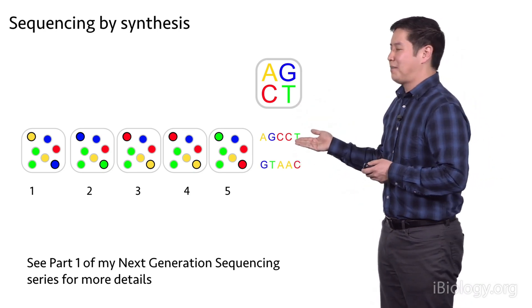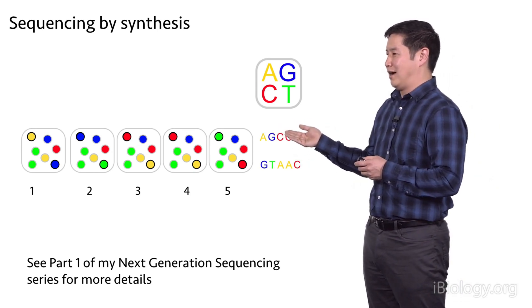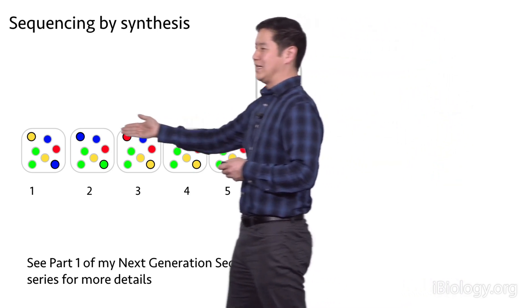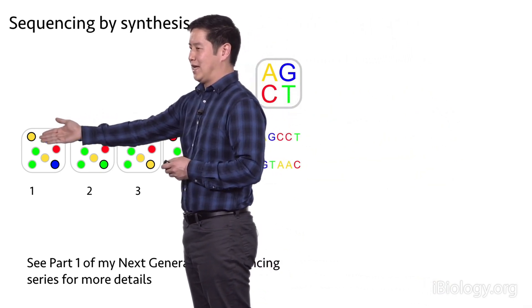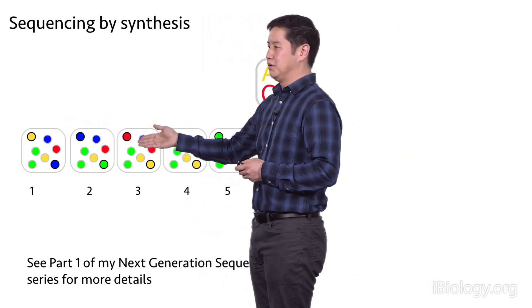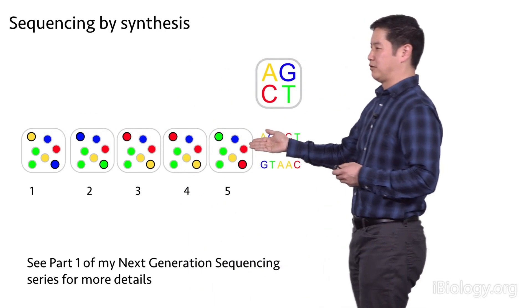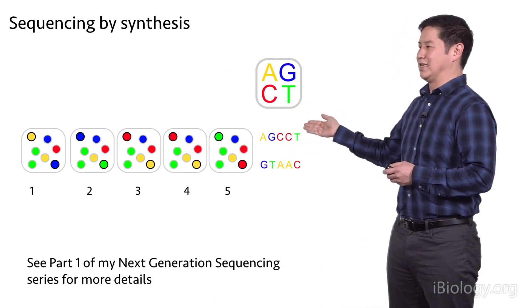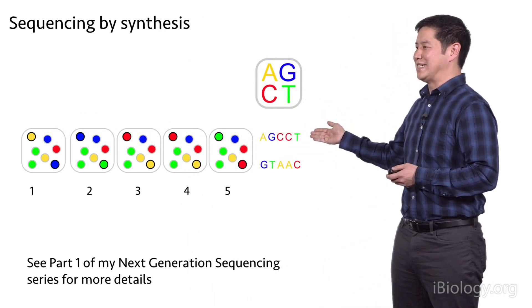If you follow the top left cluster, which is yellow on the first cycle, you can see that it starts off as yellow, then becomes blue, red, red, green. Using the color scheme, we can decode that as AGCCT.